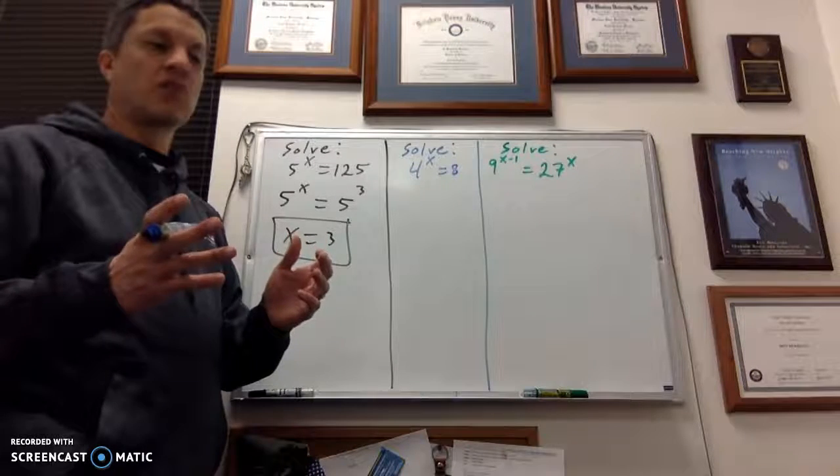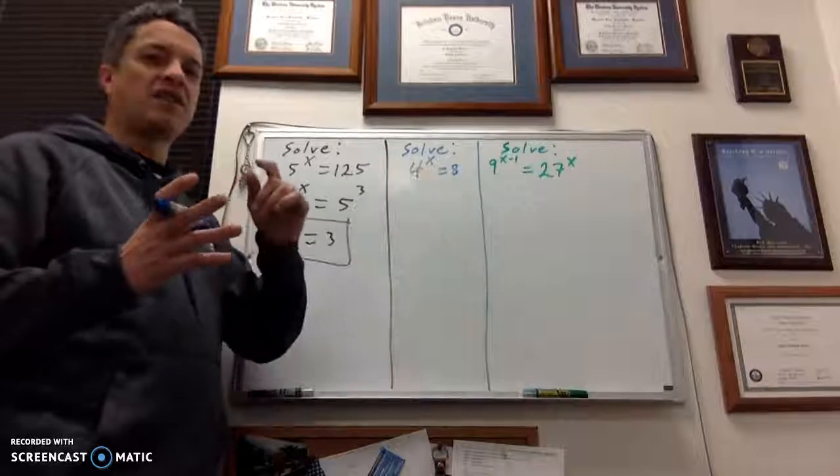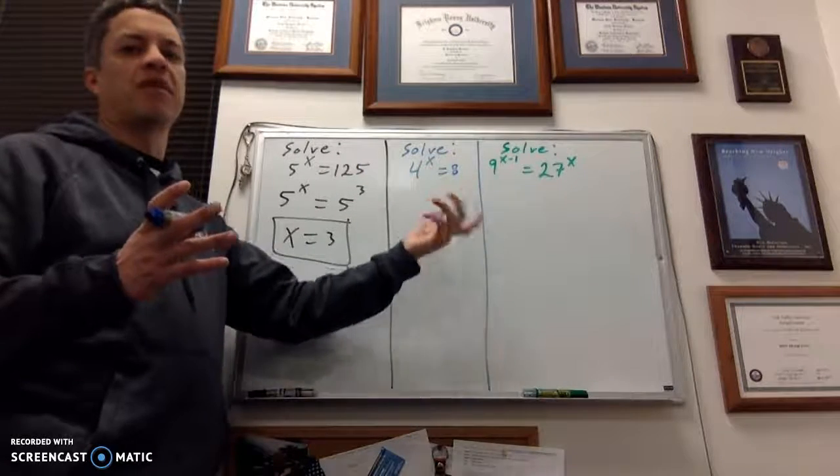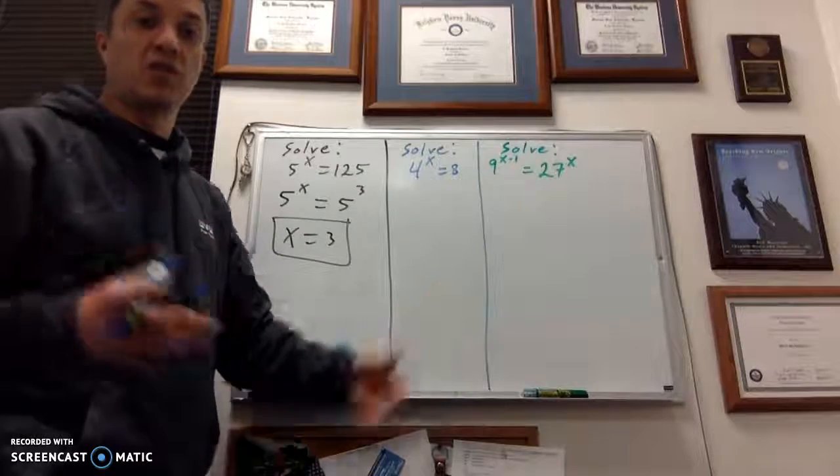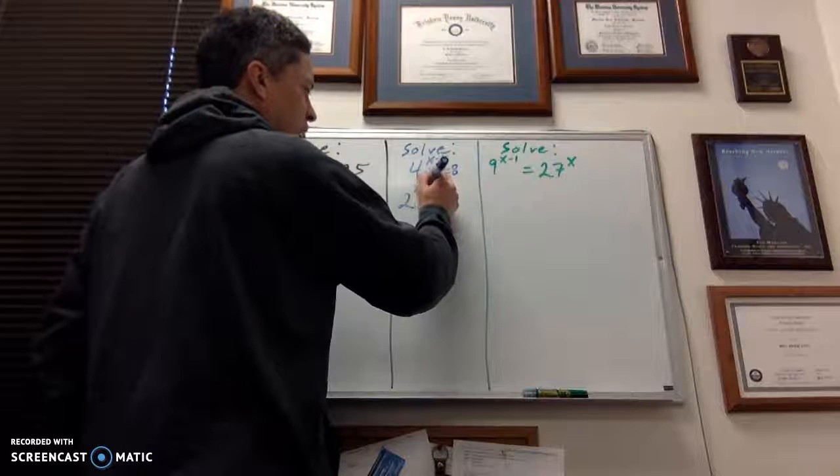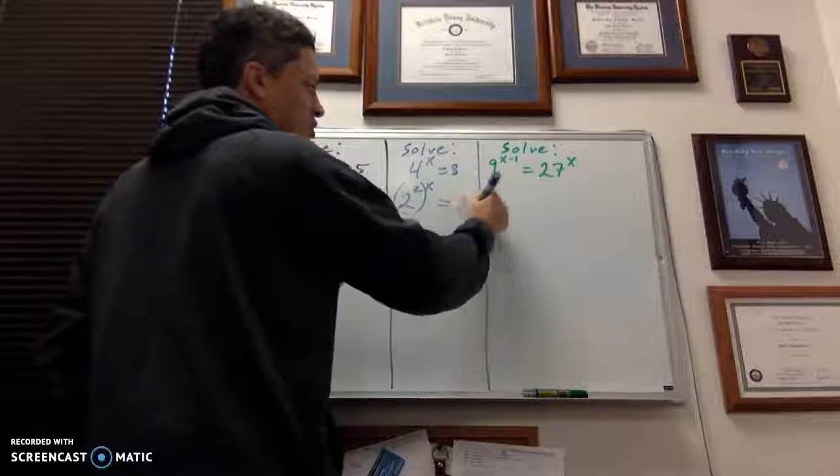Think of it like this: what number raised to a certain power will give you a 4 that also raised to another power will give you 8? In other words, what are the common factors of 4 and 8? It's 2. So I'm going to write this so that I've got 2 raised to the squared power and then raised to the x power. And on the right side, I'm going to have 2 cubed.